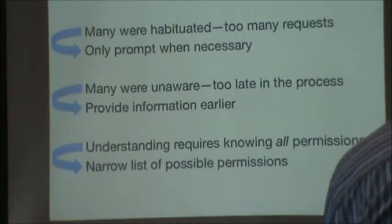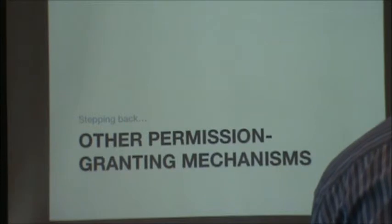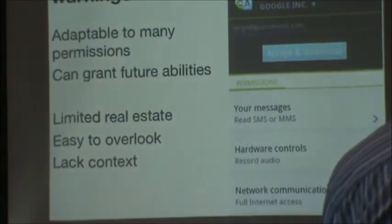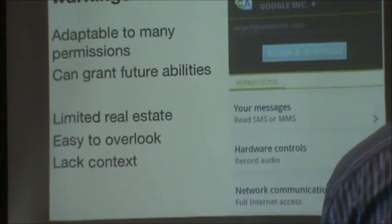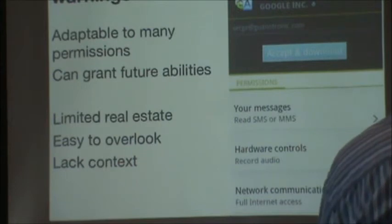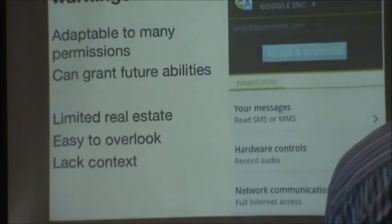From these recommendations, we decided to start looking at permission systems more generally. That study looked at installation permissions, but there are many other different ways of requesting permission for various abilities — and this applies to more than just smartphones; for instance, web apps or desktop platforms as well. Looking at install-time warnings, these are advantageous because they're adaptable to many different permissions — you just need some screen real estate to list what the app is requesting. But the problem is there's limited screen real estate, so on a mobile device it will only show a few by default and the user has to know to scroll down to see all of them. It also lacks context — it says it wants to record audio, but if you're doing this at installation time, you have no idea under what circumstances it's going to record audio or why. And as mentioned, because of where they appear at the end of the process, they're easy to overlook.